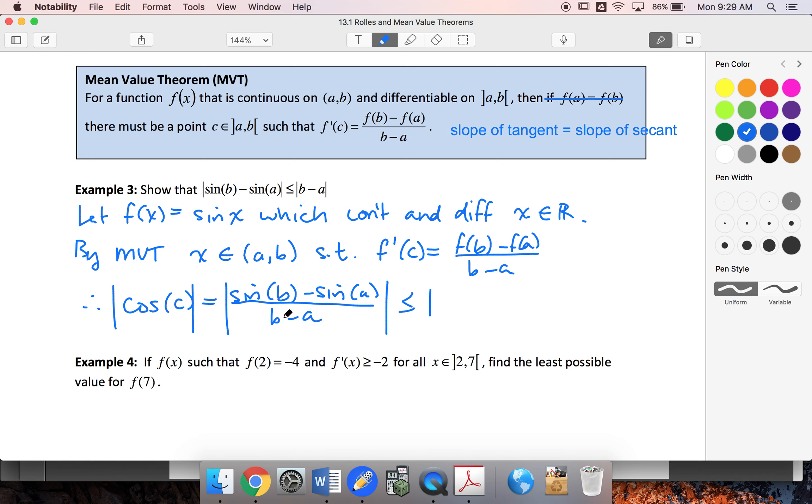And I can move (b - a) to the other side, giving |sin(b) - sin(a)| ≤ |b - a|.